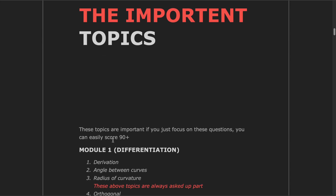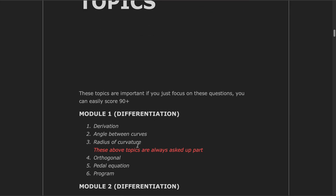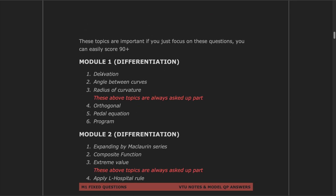The important topics — if you just focus on these questions, you can easily score 90 plus. We have divided each module into some sub-topics. These topics definitely come in exams. M1 is all about differentiation. Models 1, 2, and 3 are all about differentiation. Model 4 is all about arithmetic and model 5 is all about matrix.